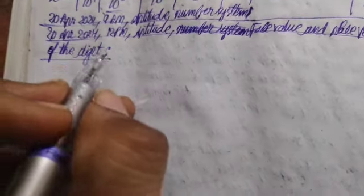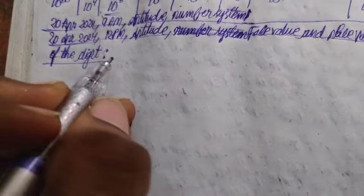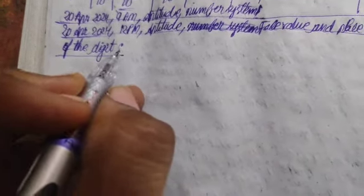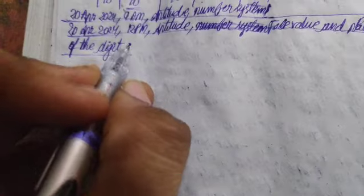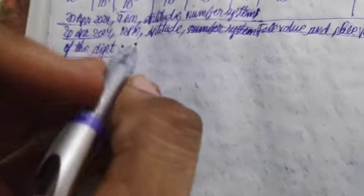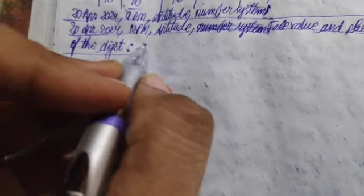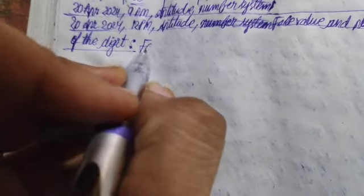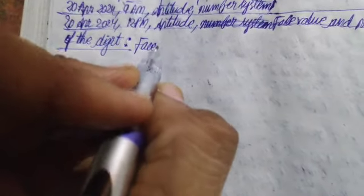In this video I am going to talk about the face value and the place value of a digit. At first I am going to talk about the face value.